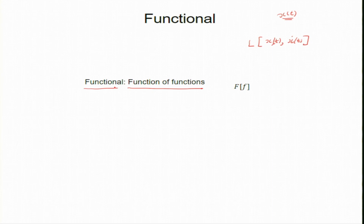In standard notation, a functional is written with large square brackets — not small round brackets. This capital F is a function of functions, and it is not one specific function; it accepts any arbitrary function we can choose.